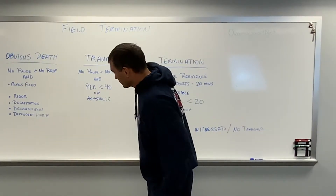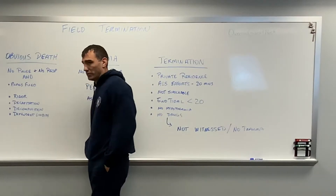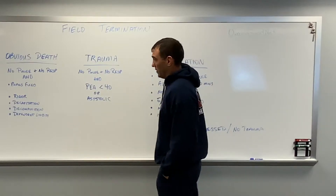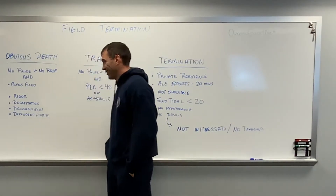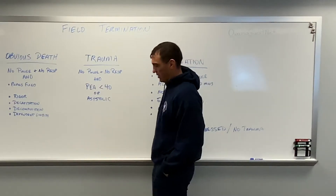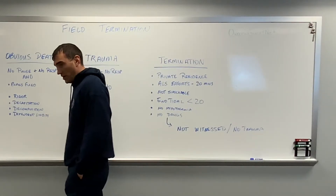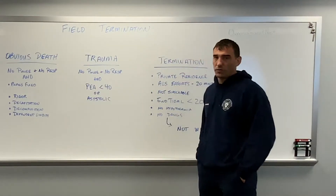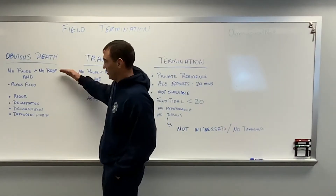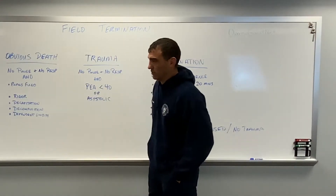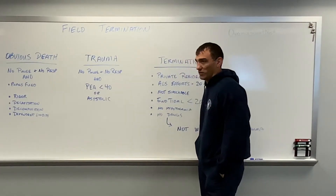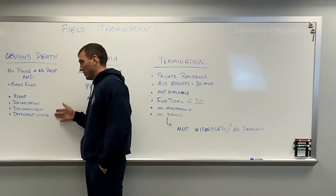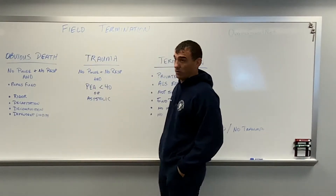Documenting obvious death should be very easy: 'I walked into the apartment, found the patient on the ground, checked and found no pulse, no respirations, and pupils were fixed. Upon further assessment, the patient had rigor. Due to these signs of obvious death, no resuscitation efforts were started.' That is perfect documentation — it lists exactly what the protocol says. What you will see a lot is people making up their own terms or reasons they didn't work the patient that aren't listed in the protocol.